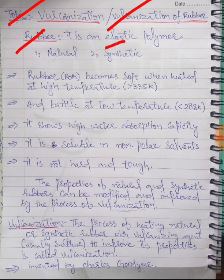It is of two types: natural rubber and synthetic rubber. Natural rubber is obtained from plants, and synthetic rubber is made in laboratories.